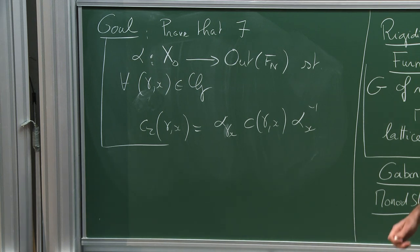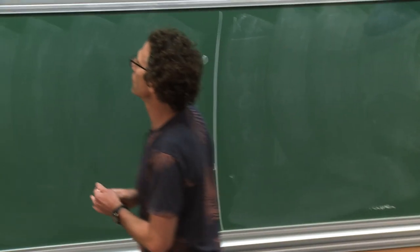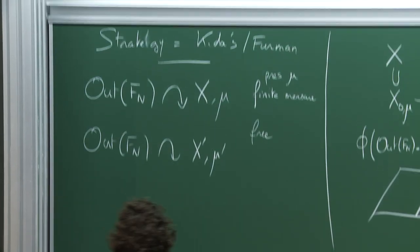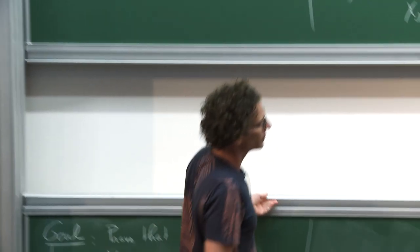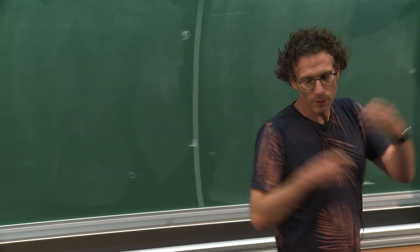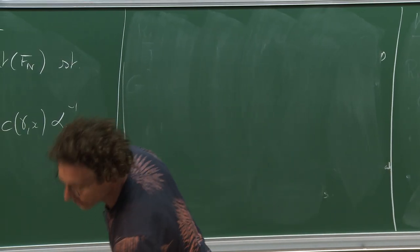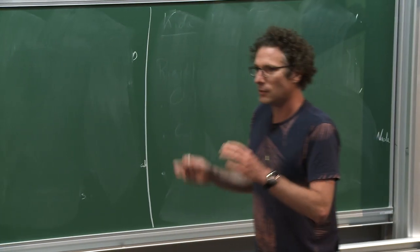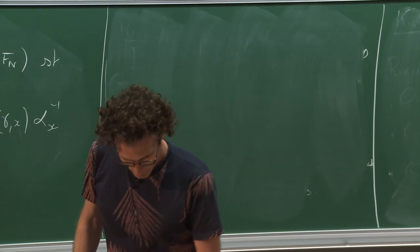Something convenient: you don't need to start with two actions of Out(Fn) really. You can start with a finite index subgroup Out₀(Fn) — the kernel of the map to homology mod 3. That's convenient because many things that could be periodic are automatically fixed in this subgroup. For instance, this subgroup is torsion free, and free factors that are periodic are fixed. So it suffices to start with this action for these subgroups.